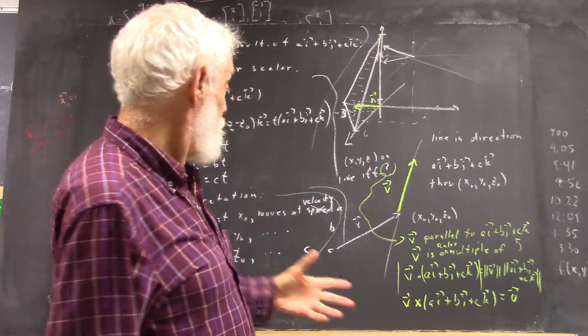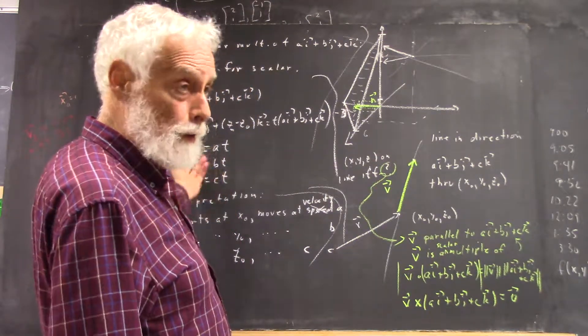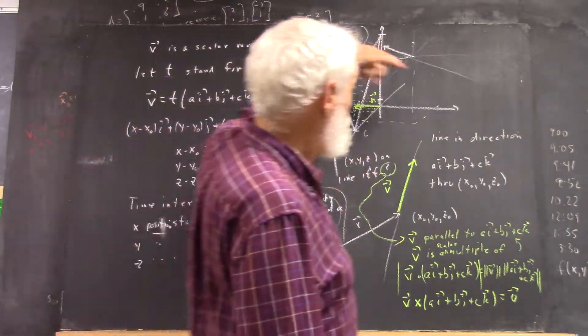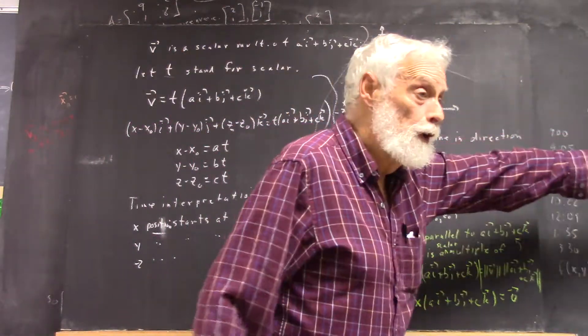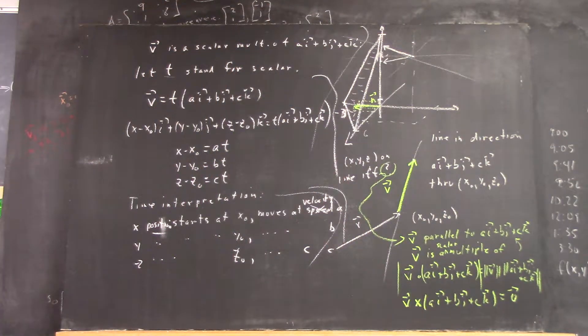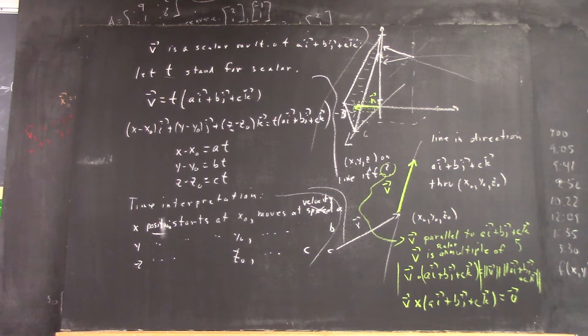And in time, if t is your coordinate, or t is your parameter, it goes from negative infinity to infinity, I'll move from way out there on this line to way out there on this line. So it's a useful image, and has implications for a lot of things we're going to do when things don't move at constant speed.